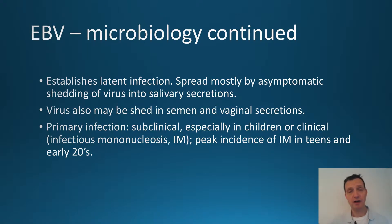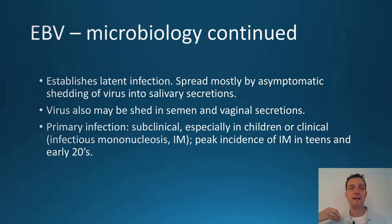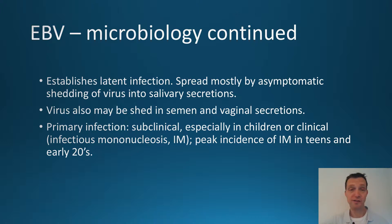Once the infection is established it can come out and spread through secretions, most notably salivary secretions in the salivary glands — that's one reason why it's called a kissing disease. The virus can also be shed in semen and vaginal secretions. If you haven't caught Epstein-Barr virus as a child you've almost certainly caught it by the time you become sexually active, often in the late teens or 20s. This leads to the peak incidence of infectious mononucleosis — technically known as glandular fever — in teens or early 20s.